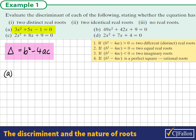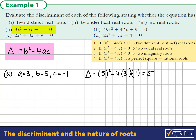In question a, we have the equation 3x squared plus 5x minus 1. So a is 3, b is 5, and c, the constant term, is negative 1. Therefore, the discriminant is equal to 5 squared minus 4 times 3 by negative 1. When we evaluate this, we see that it is 37.